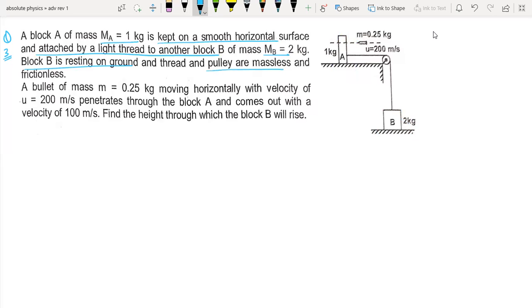A bullet of mass 0.25 kg is moving horizontally with velocity 200 m/s and penetrates through block A.